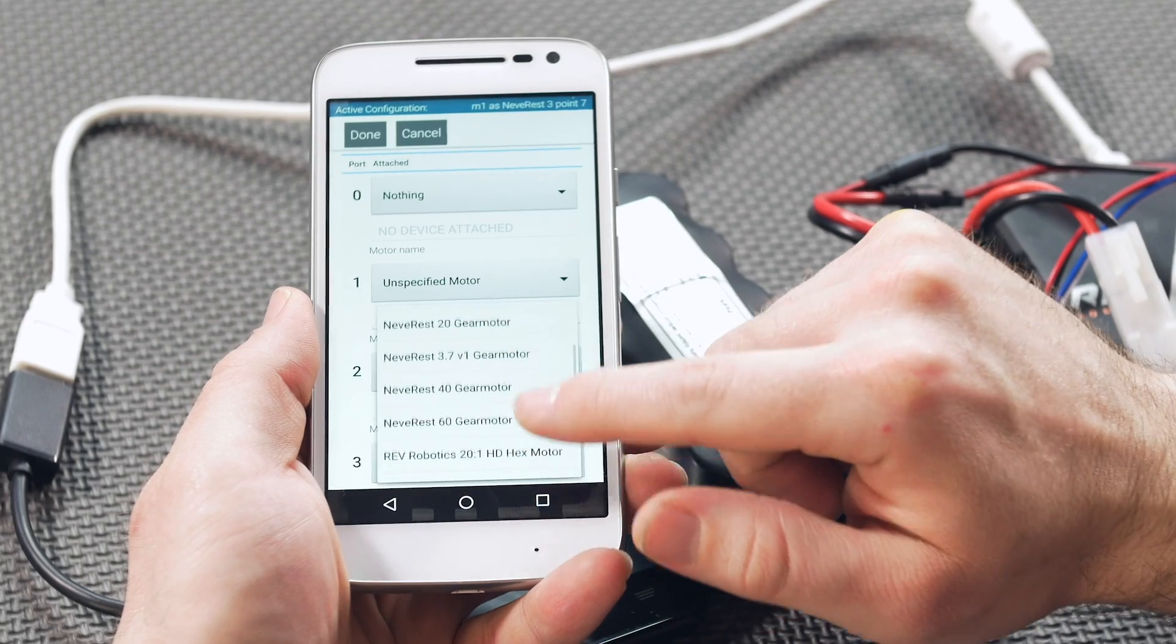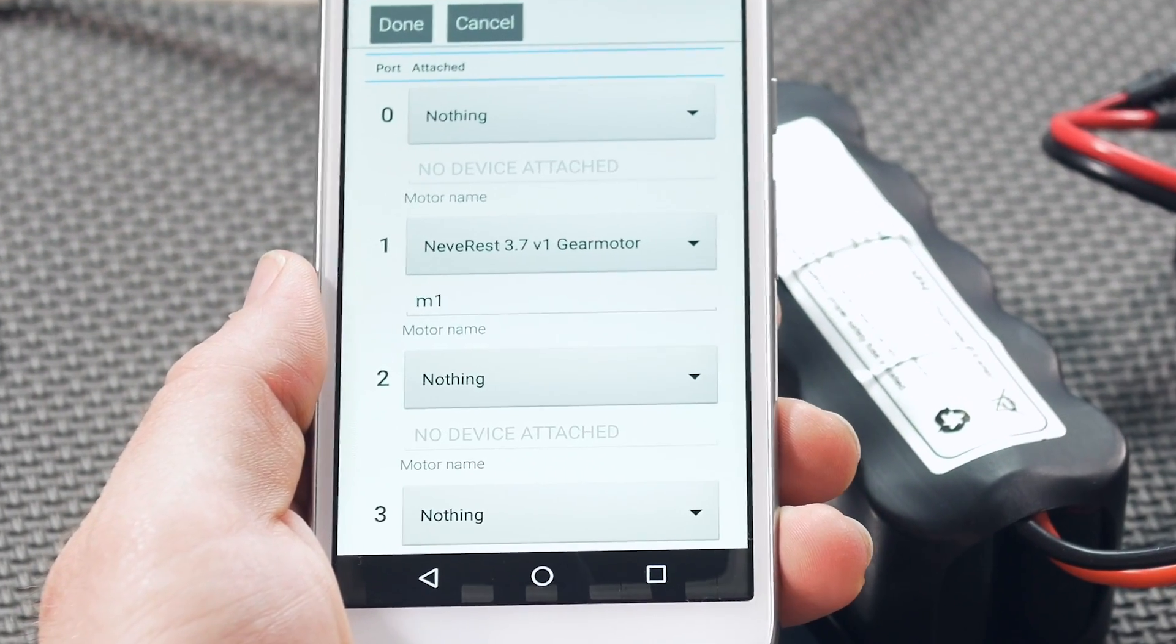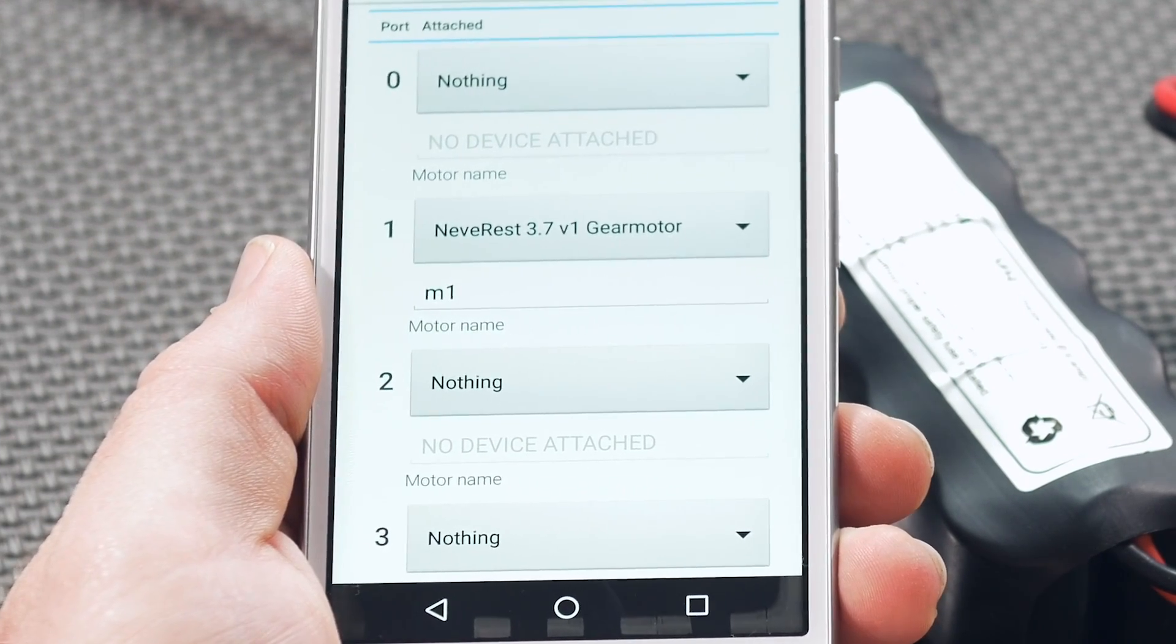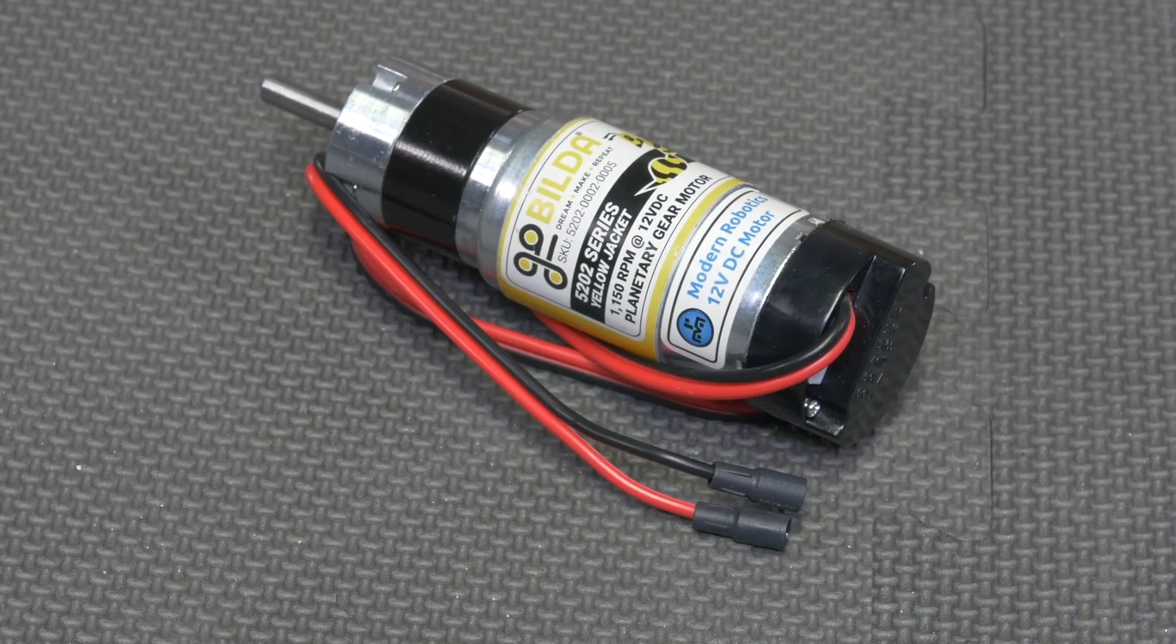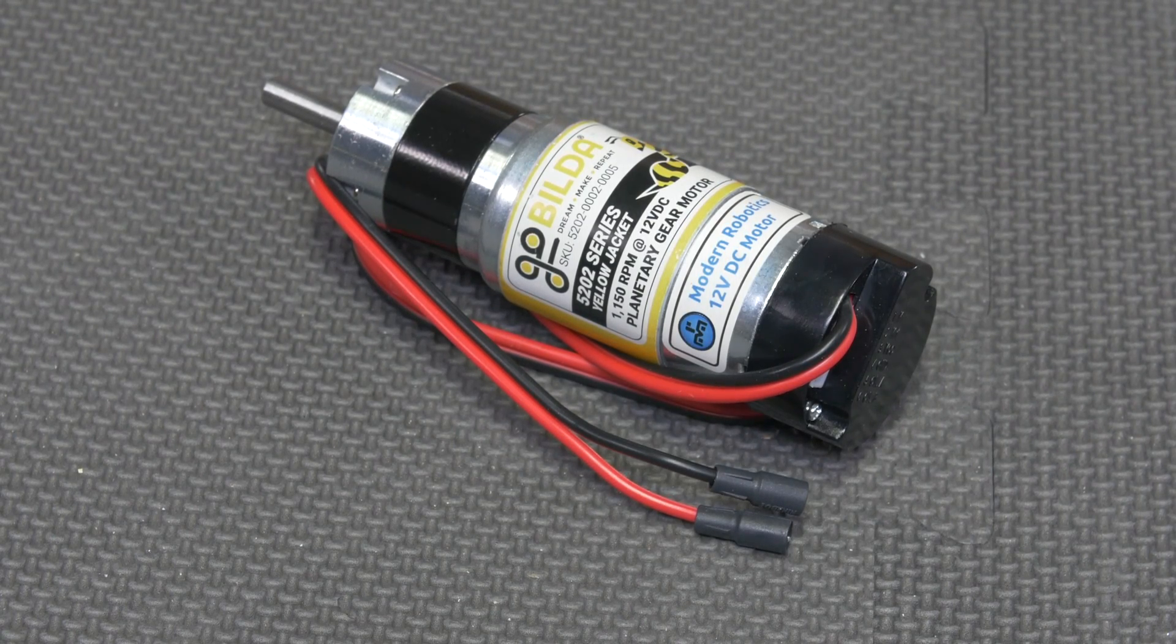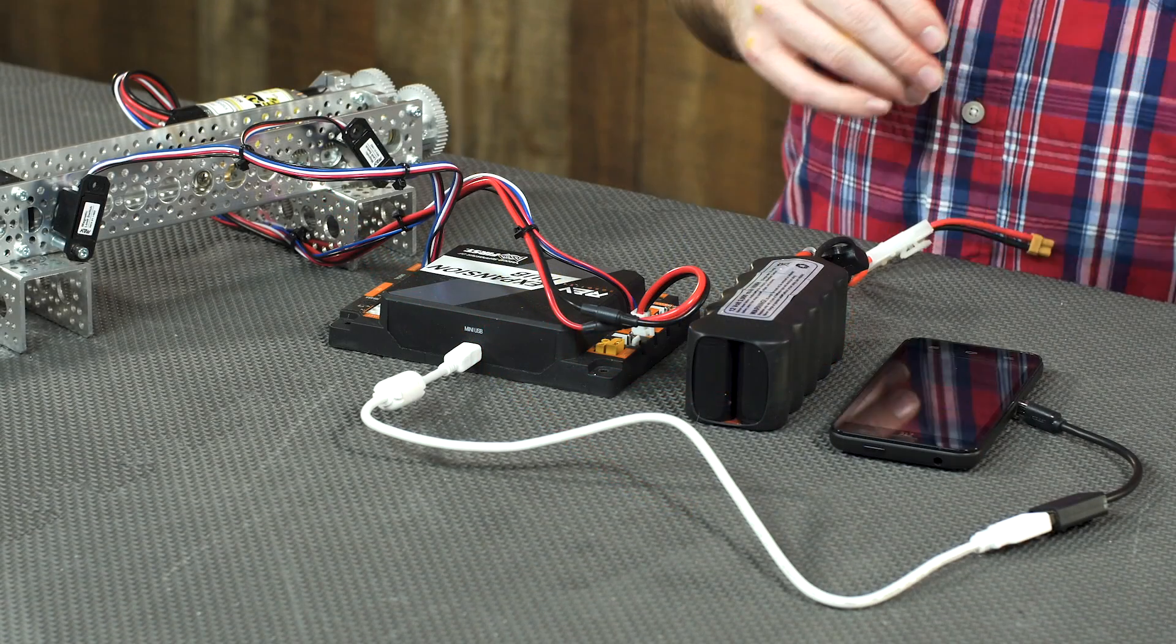But another one you might want to try is the Neverrest 3.7 to 1. And that recommendation is specifically if you're using not just the Yellowjacket, but specifically the 5 to 1 ratio, the 1150 RPM Yellowjacket motor, because it is so fast that the gear ratio is most similar probably to that one. This is 5 to 1, that's 3.7, nearly 4.